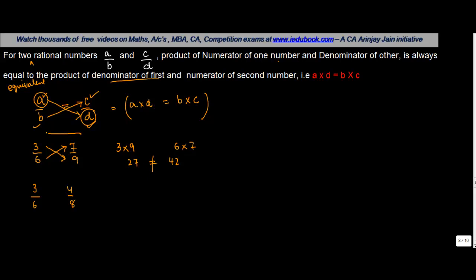Which means that these two numbers, 3 upon 6 and 7 upon 9, are not equivalent rational numbers.